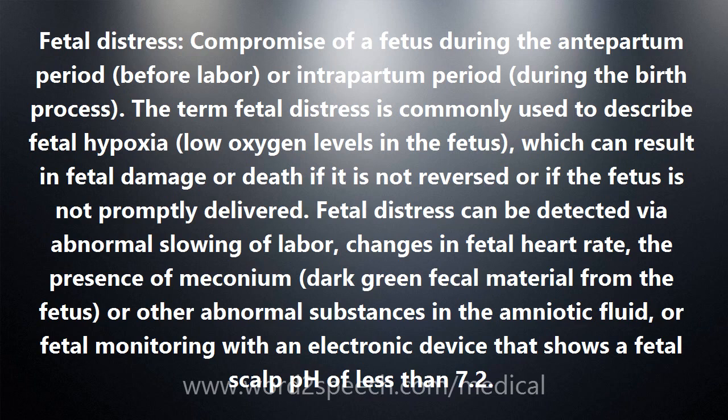Fetal distress can be detected via abnormal slowing of labor, changes in fetal heart rate, the presence of meconium — dark green fecal material from the fetus — or other abnormal substances in the amniotic fluid, or fetal monitoring with an electronic device that shows a fetal scalp pH of less than 7.2.